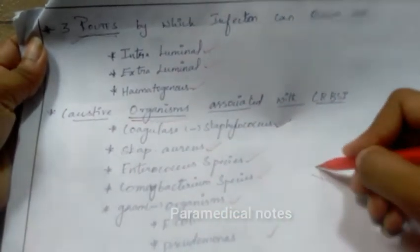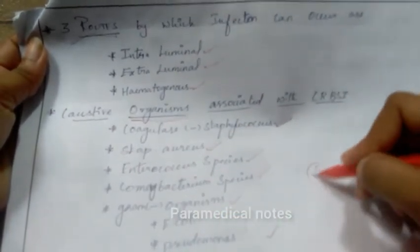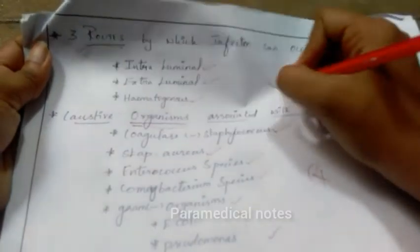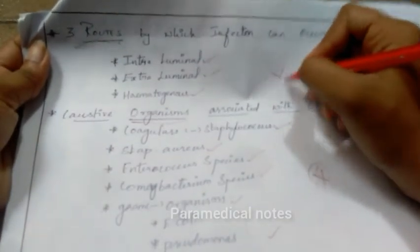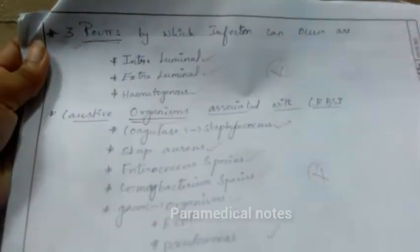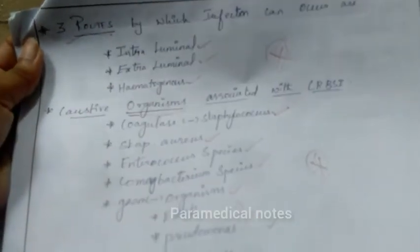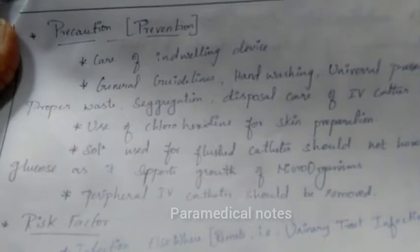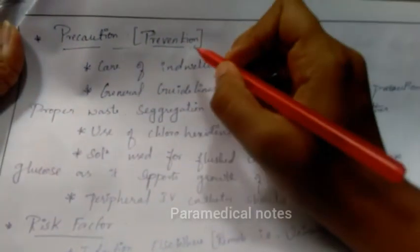For causing organisms, we should write: coagulase-negative staphylococcus, enterococcus, and corynebacteria. These are the main organisms responsible for catheter-related bloodstream infection.